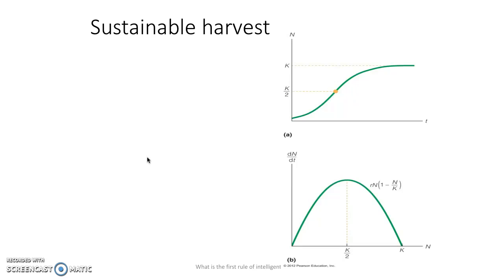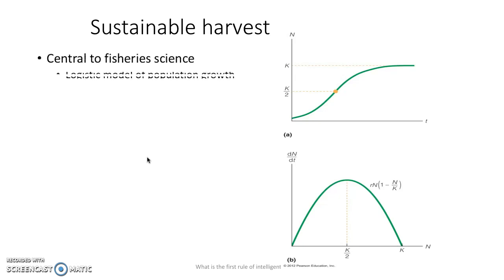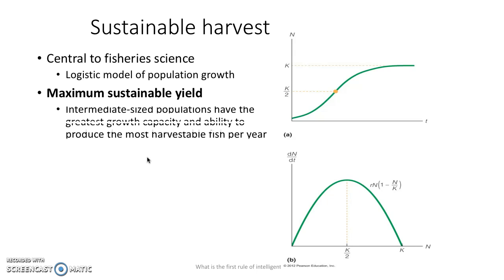The idea of sustainable harvest — you've seen the K carrying capacity graph, the logistic model of population growth. Central to fisheries science is this concept. Maximum sustainable yield is really what fisheries science is looking at. These intermediate-sized populations, this idea of K one-half, that's where populations have the greatest capacity to grow and the ability to produce the most harvestable fish per year. That's the sweet spot.